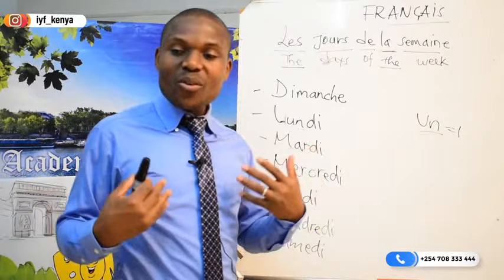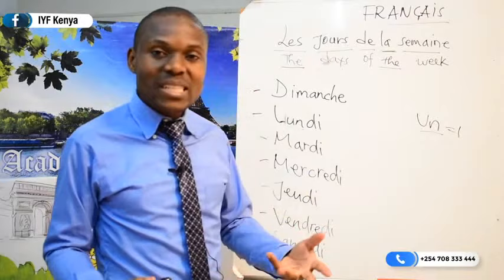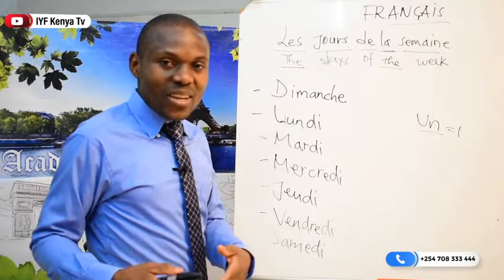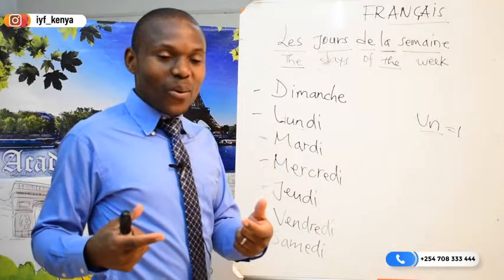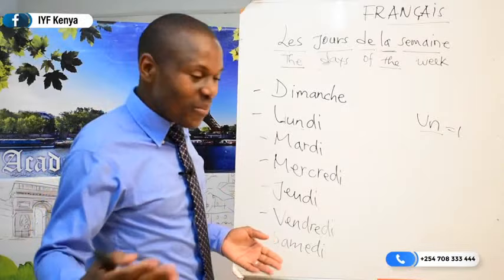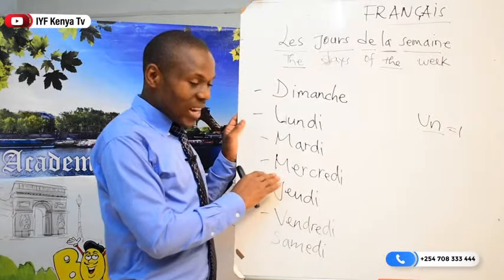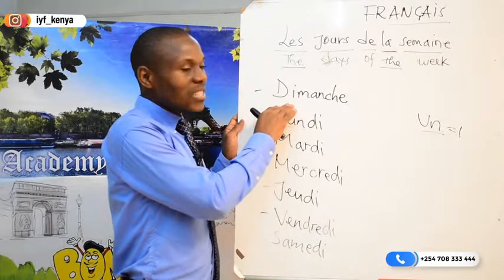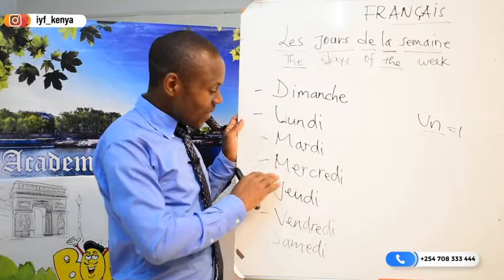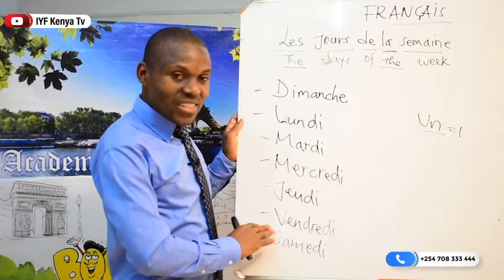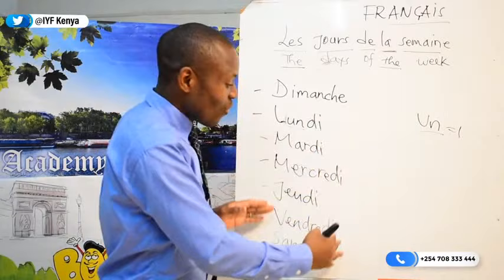And the last one we have 'samedi.' Some people say 'samedi,' but those who know French well say 'samdi.' For the sake of learning let us say 'samedi,' but when your tongue gets used to French words you will pronounce it like 'samdi.' So we have: dimanche, lundi, mardi, mercredi, jeudi, vendredi, samedi — that is Sunday, Monday, Tuesday, Wednesday, Thursday, Friday, Saturday. These are the days of the week in French.